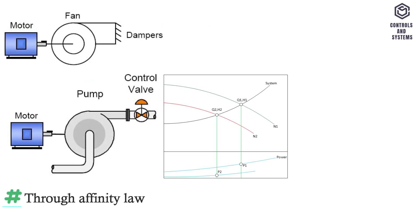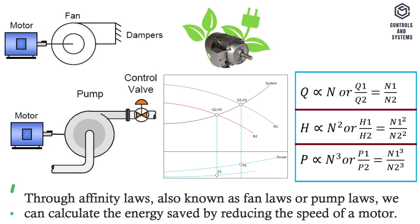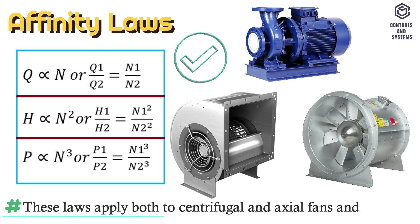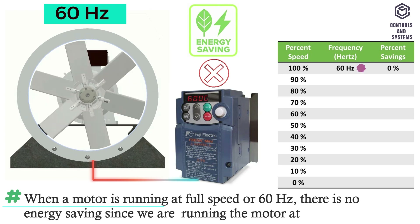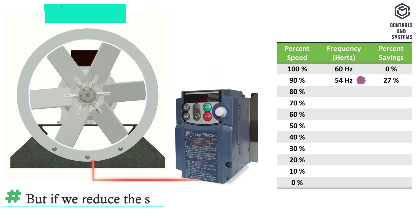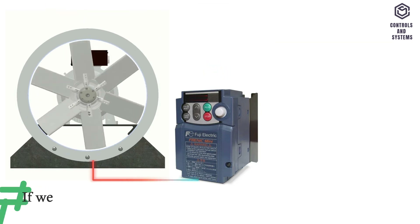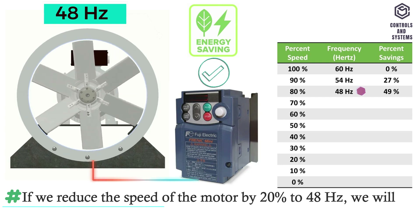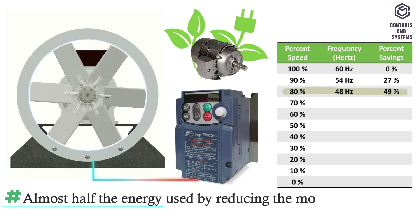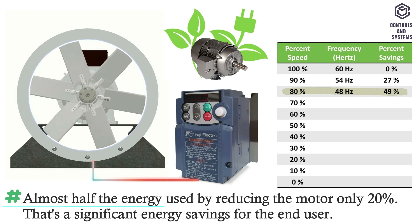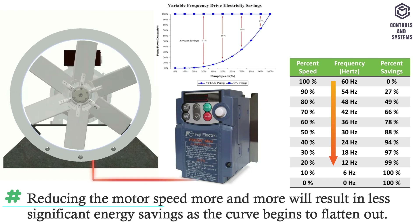Energy savings through affinity laws — also known as fan laws or pump laws — allow us to calculate the energy saved by reducing the speed of a motor. These laws apply to both centrifugal and axial fans and pumps. When a motor is running at full speed or 60 hertz, there is no energy saving. But if we reduce the speed by just 10% to 54 hertz, we reduce the energy used by 27%. If we reduce the speed by 20% to 48 hertz, we reduce the energy used by 49% — almost half the energy used by reducing motor speed by only 20%. Reducing motor speed more and more will result in less significant energy savings as the curve begins to flatten out.